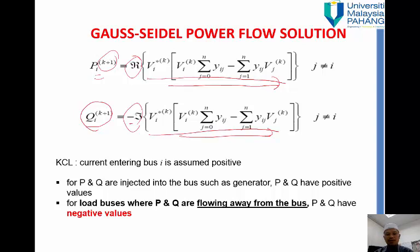So please be in mind that we use, referring to the KCL, the current entering bus is assumed to be positive. That's why your generation entering to the bus, normally P and Q we refer to the positive value because it's entering the bus. And when we refer to the loads, because it's leaving the bus, normally your load will become a negative value.